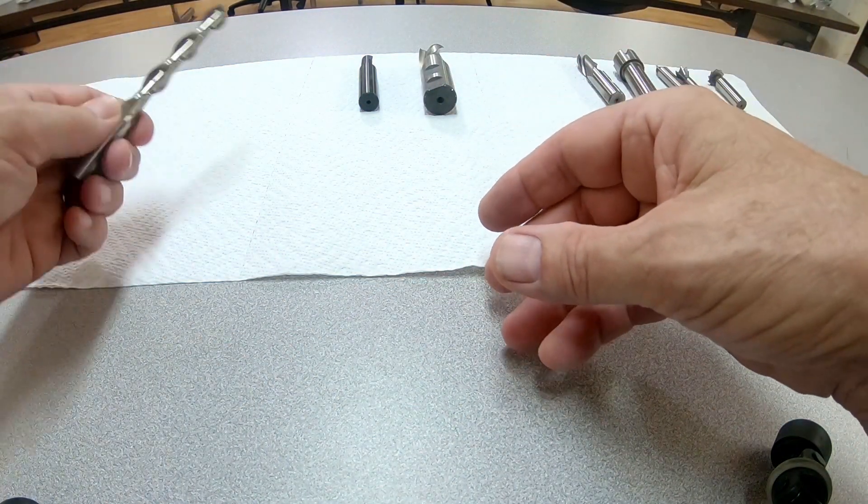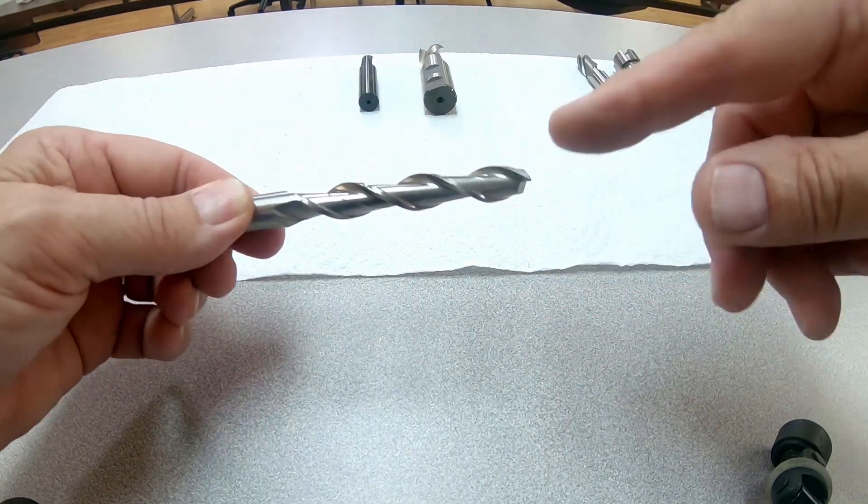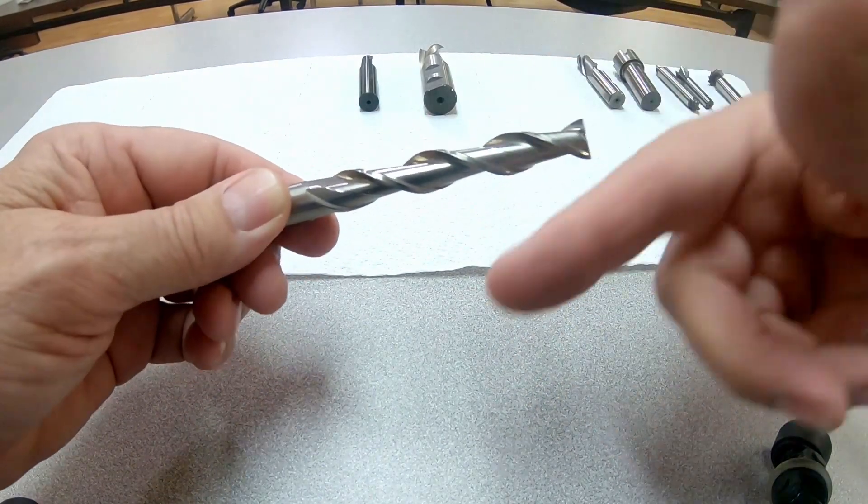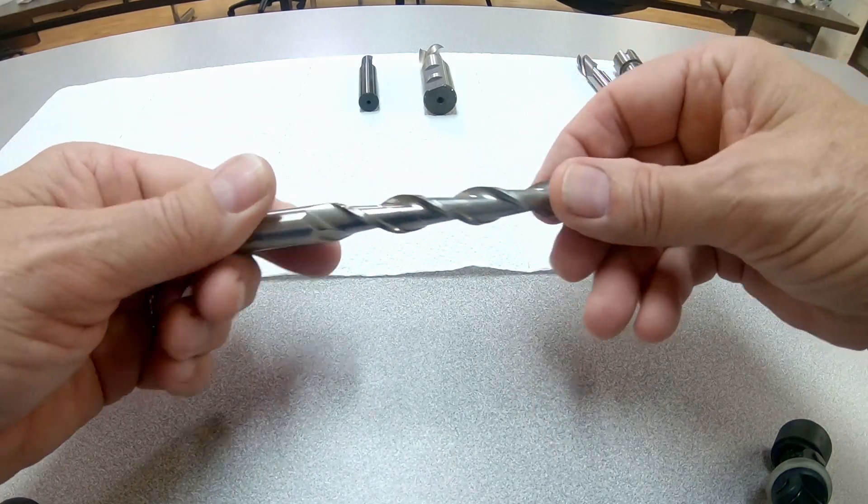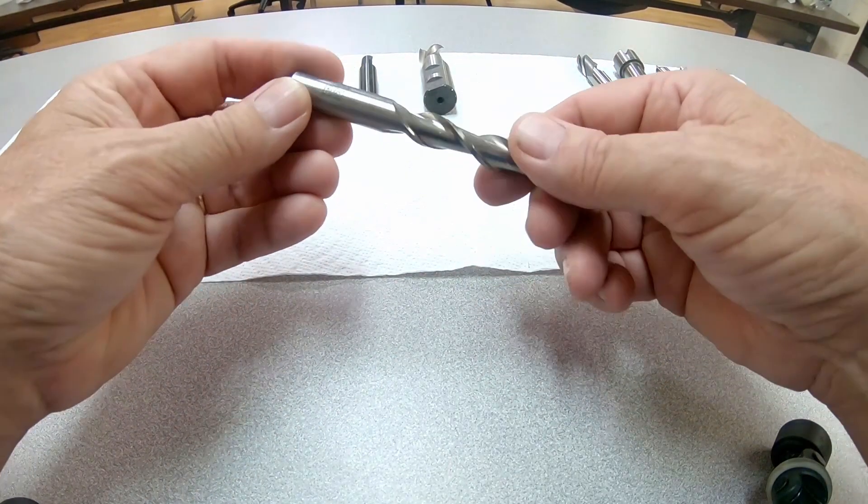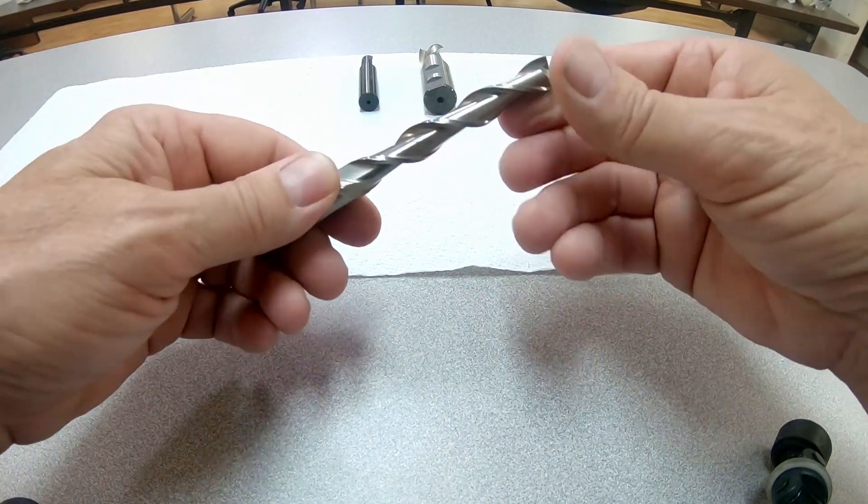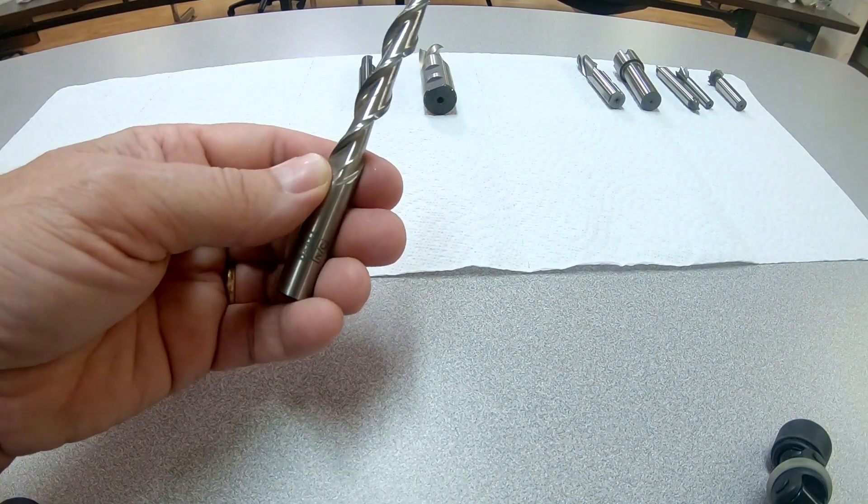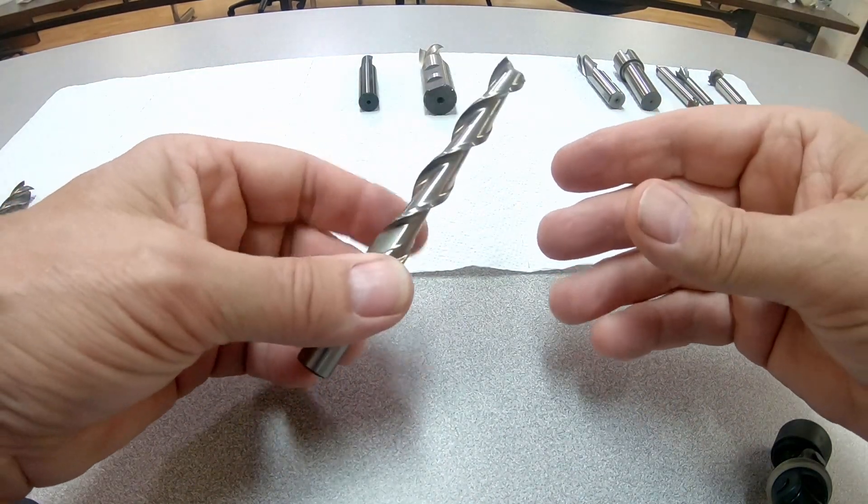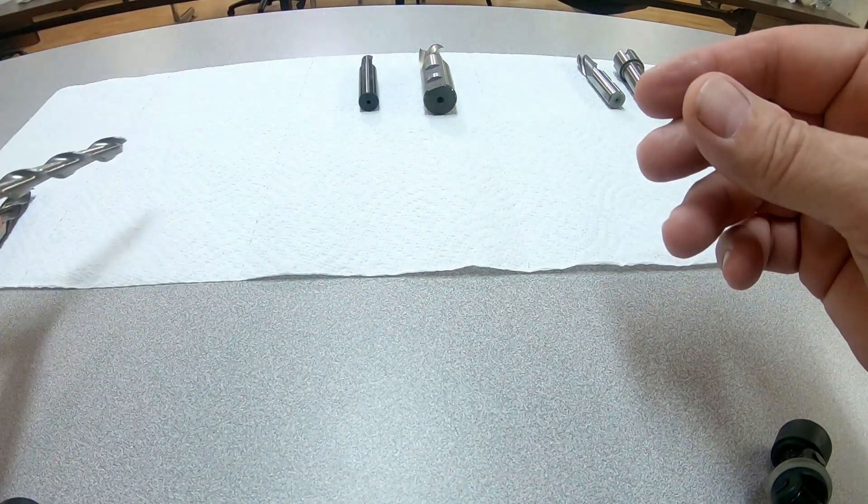And end mills come all different ways. This is one that's specifically made for aluminum. You see it has a very high helix, very fast rate to move chips quickly. But you can see how long it is. You can get way down inside something. This is a nice end mill, but not for general purposes. This would tend to chatter too much. So it's great if you're working down inside a big cavity.